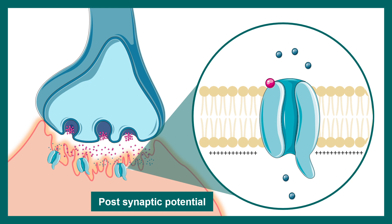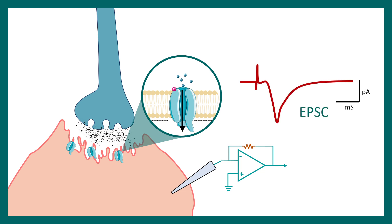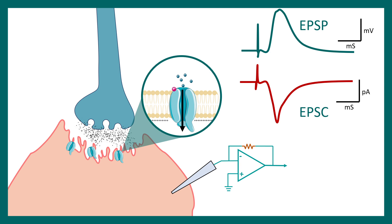Now let's look at the electrophysiological signatures. Researchers record using sharp electrodes from the muscle and observe a change in either current or potential. The change in current is known as the excitatory post-synaptic current, or EPSC — the axis shows picoamps and milliseconds. There can also be an excitatory post-synaptic potential, or EPSP, which is a potential change.